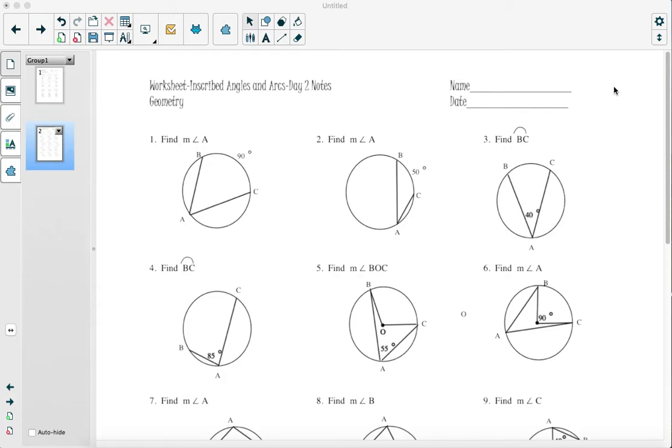In case you've been having trouble getting started with worksheet 3, I thought I'd work through a few of these to help you out. We're talking about angles in circles and the arcs that are related to them. On the first problem it says find the measure of angle A. Angle A is right here.